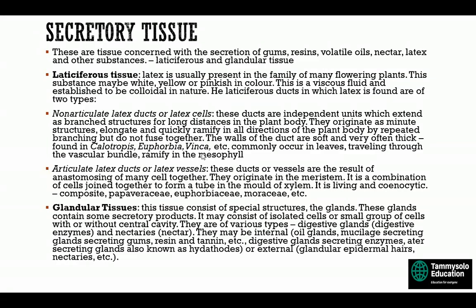Glandular tissue consists of special structures called glands, which contain some secretory products. It may consist of isolated cells or a small group of cells with or without a central cavity. There are various types: digestive glands secreting digestive enzymes; nectaries secreting nectar; internal oil glands; mucilage-secreting glands; glands secreting gums, resins, and tannins. Secretory glands may be internal — such as digestive glands — or external, such as glandular epidermal hairs and nectaries.